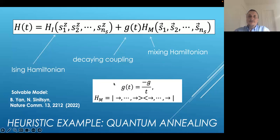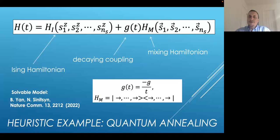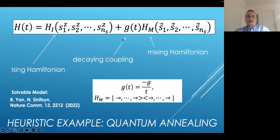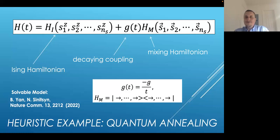In this solvable model, we assume that the mixing Hamiltonian is the projection operator with all spins pointing in the x direction, and the coupling decays with time as 1/t, where g is a parameter describing deviation from the adiabatic approximation. By exactly solvable, I mean we still do not know how to solve NP-complete problems or what the ground state is — instead we find only the probability of the ground state and the probability of excitations.